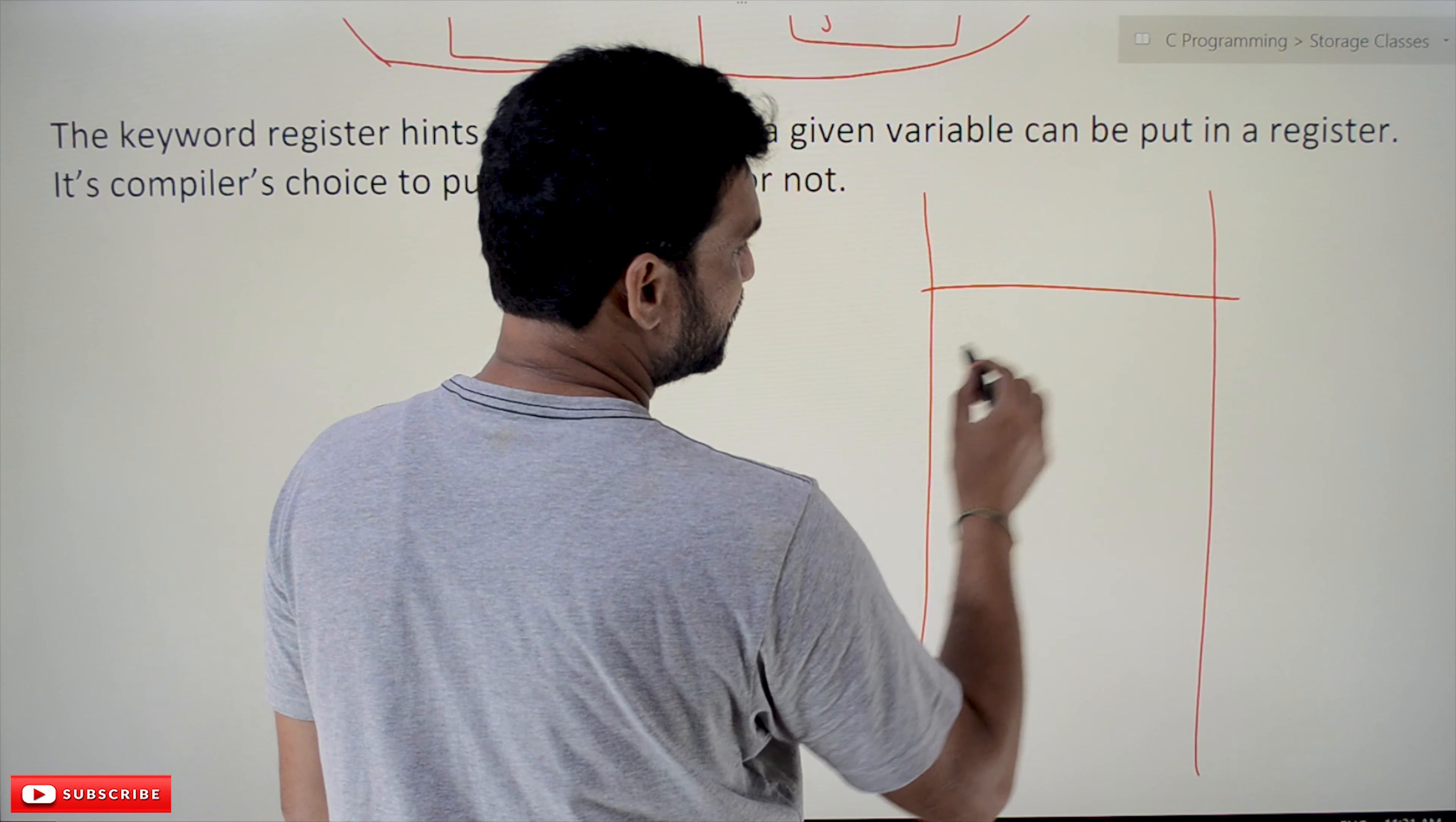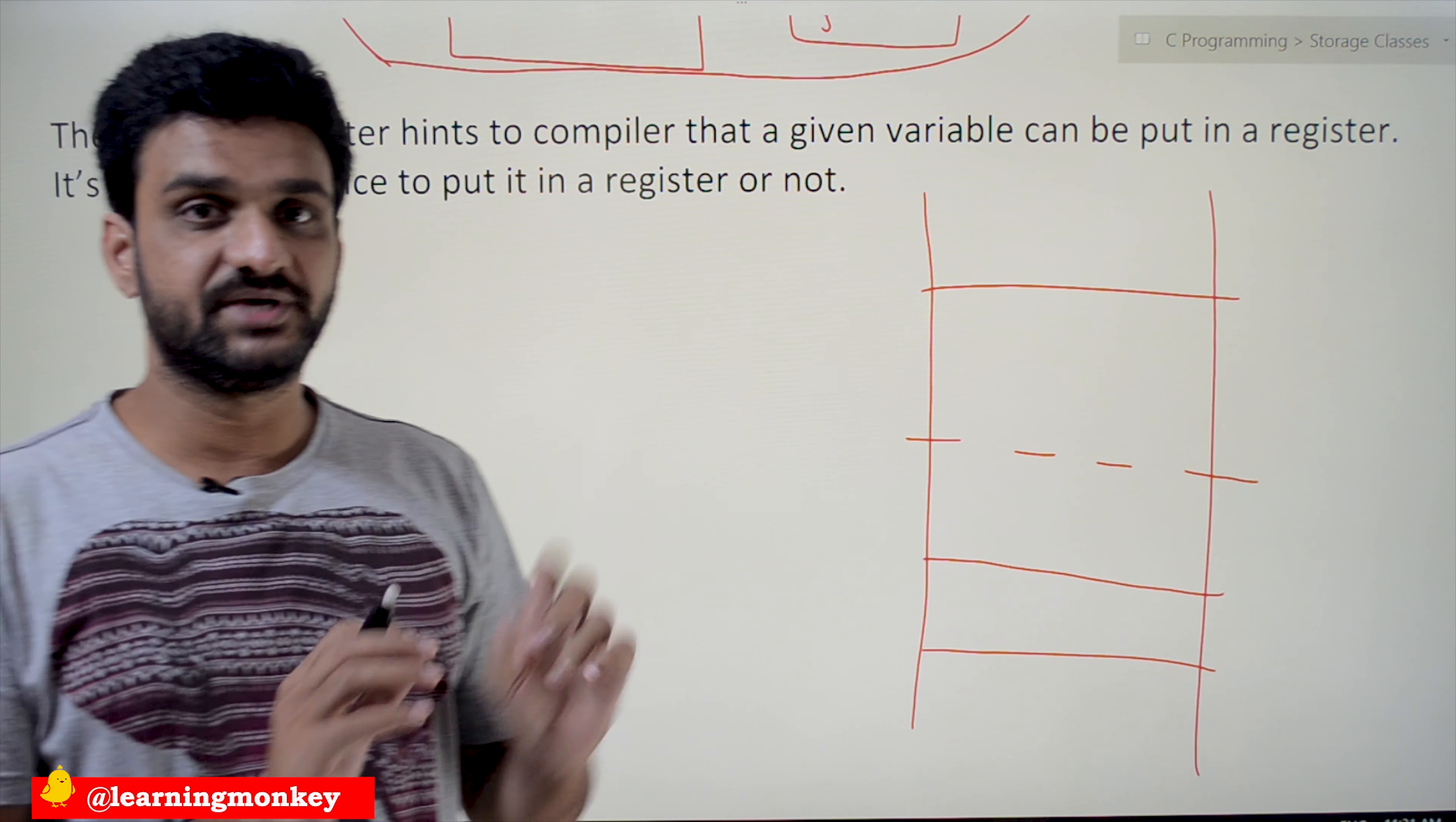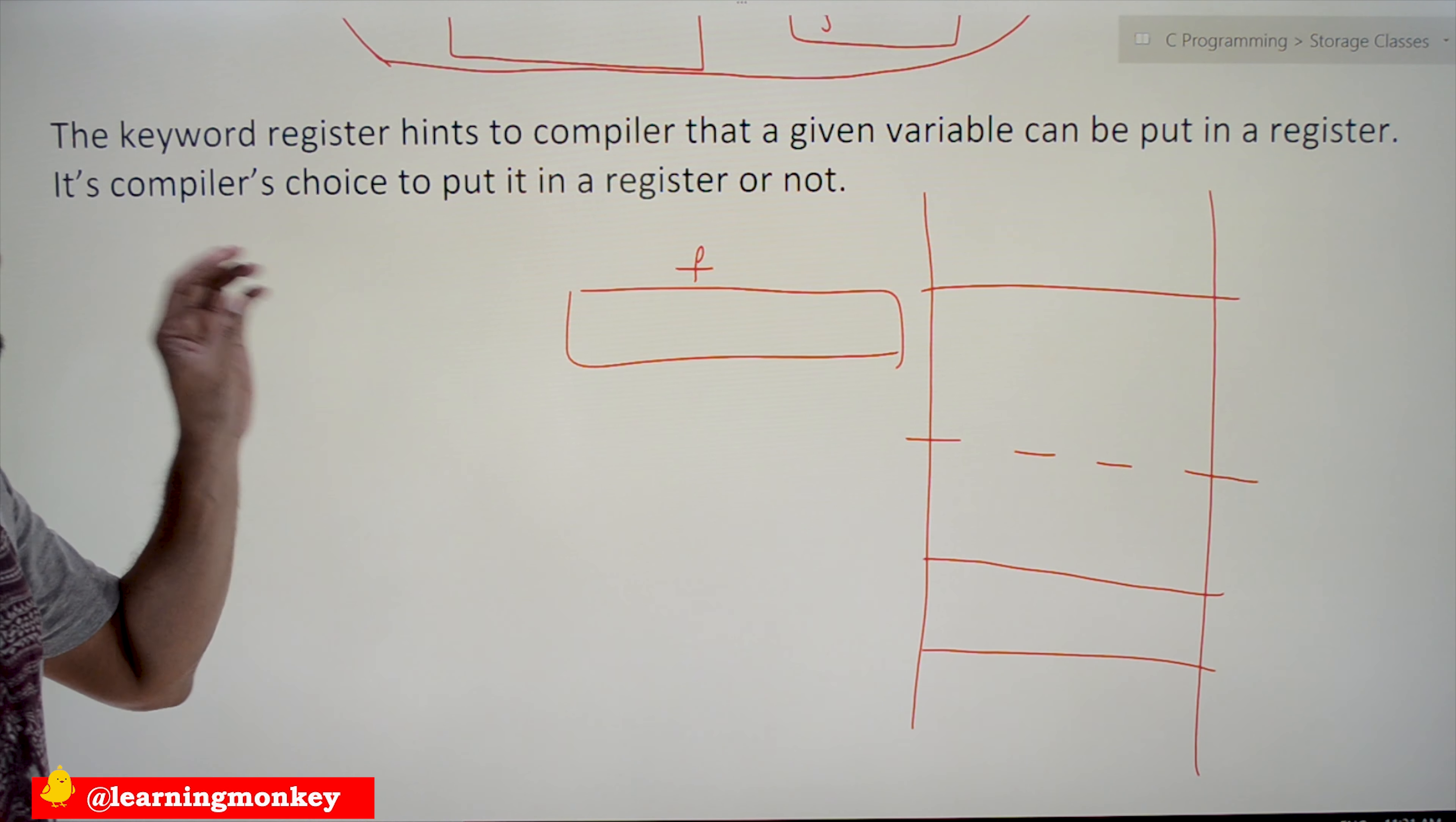So far all the variables that we have created are getting stored on RAM, on this memory. Whatever variables that are there in the program, all those variables will get stored in the RAM. But if we want to store some of the variables on registers - register is a device which works faster than RAM. It is a device which is capable of storing a variable. It has some storage capacity and is faster than RAM.